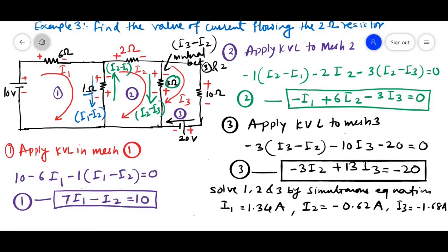Question asks we have to find current flowing through this 2 ohm resistor. Current flowing through this 2 ohm resistor is I2. So, I2 equal to minus 0.62 ampere.